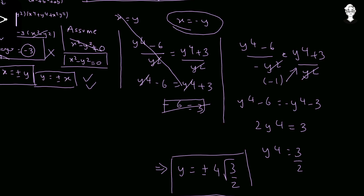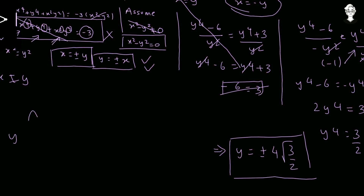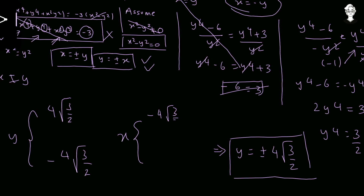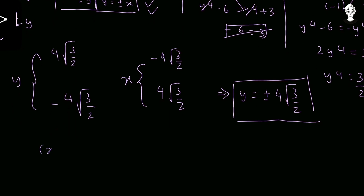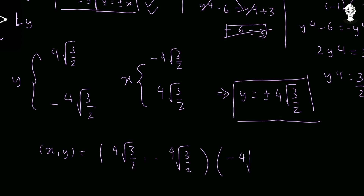Since x equals negative y, the corresponding values of x are the negatives of these y values. The final solution pairs (x, y) are: the fourth root of 3/2 comma negative fourth root of 3/2, and negative fourth root of 3/2 comma positive fourth root of 3/2.